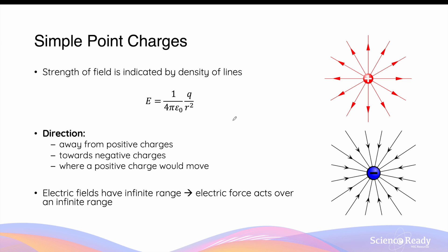For simple point charges — that is isolated positive or negative charges — the strength of the electric field can be calculated using this equation: 1 over 4π epsilon-naught, where epsilon-naught is the electric permittivity constant of free space, equal to 8.854 × 10⁻¹² as provided by the data sheet, times the magnitude of charge, divided by r squared.